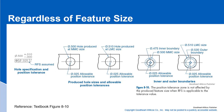Continuing with regardless of feature size — this is the same example. When we make the hole at the MMC condition, we have 25 thousandths allowable tolerance. And if we make this hole at the LMC condition, we still have 25 thousandths allowable positional tolerance. The inner and outer boundaries: at LMC size the outer boundary extends way out, and the hole will always fall outside of the 475 thousandths inner boundary.